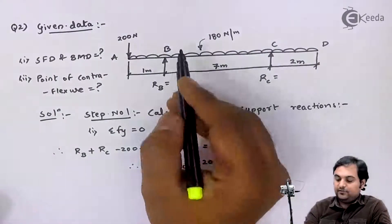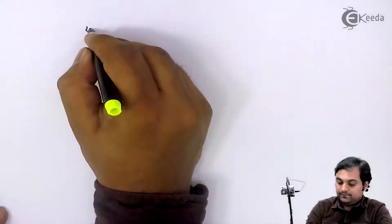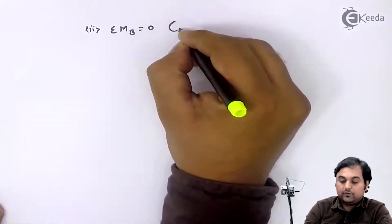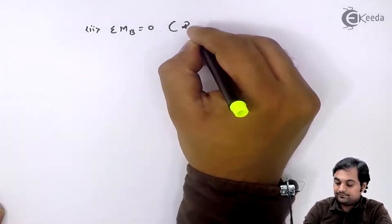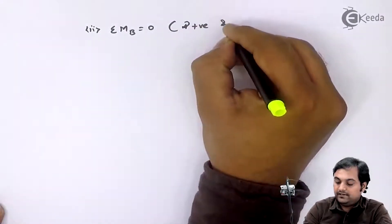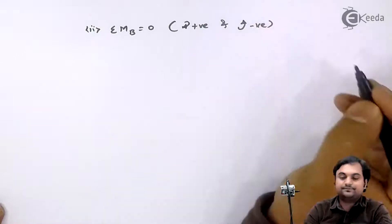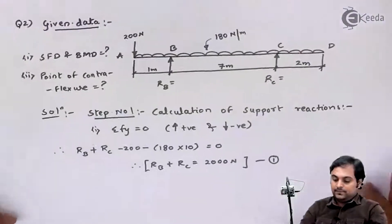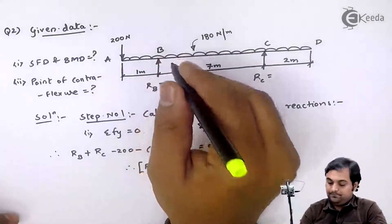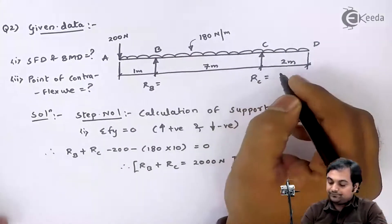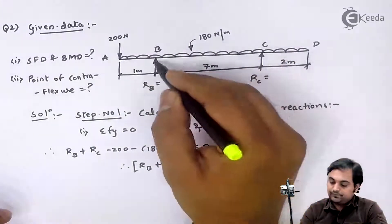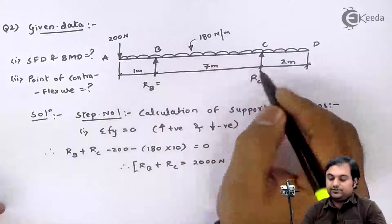Next, taking moments at point B — summation of moments about point B is equal to 0. Clockwise moments are positive and anticlockwise moments are negative. If I take the moment at B, RC is upward and produces an anticlockwise moment, and the distance is 7 meters, so it is minus RC into 7.